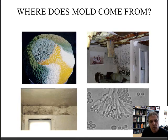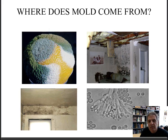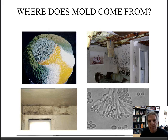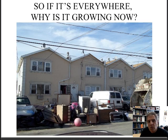Let's start with: where does mold come from? Well, mold is everywhere. Mold spores in particular are on our skin, on our hair, on our clothes, in our furnishings. They're inside and they're outside. They can be easily dispersed and are essentially impossible to get rid of. So if it's everywhere, why is it growing now?